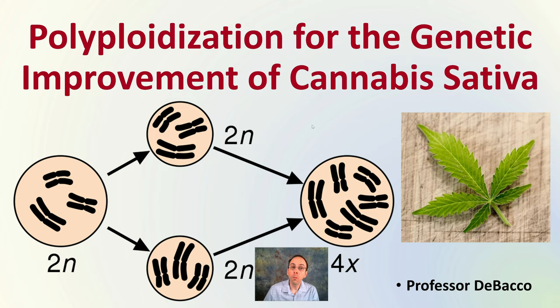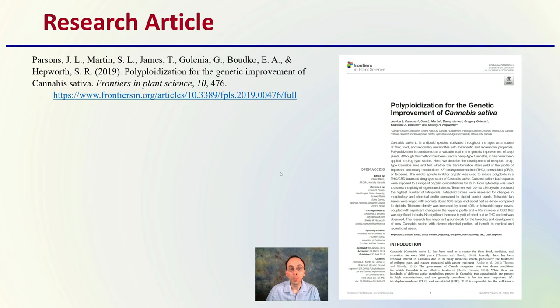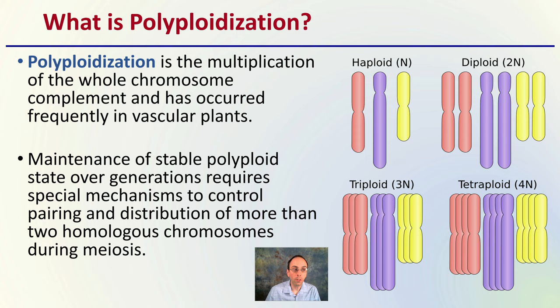This is the research article if you want to look at it yourself, provided with the reference, citation, and a direct link, as well as a copy of the first page. So what is polyploidization? This is the multiplication of the whole chromosome complement that has occurred frequently in vascular plants.